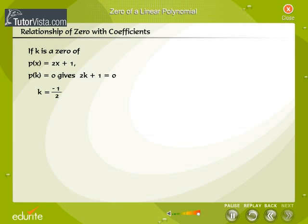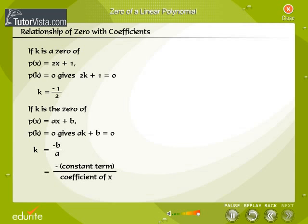In general, if k is the zero of p(x) = ax + b, then p(k) = 0 gives ak + b = 0, and k = -b/a, which equals the negative of the constant term divided by the coefficient of x.